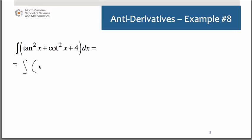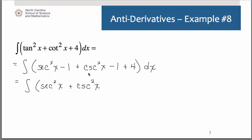Tangent squared is equal to secant squared of x minus 1. Cotangent squared is equal to cosecant squared of x minus 1. And then we have the plus 4. Let's go ahead and simplify that a little bit before we actually do our antiderivative. Negative 1 minus 1 plus 4, of course, is plus 2. It saves us a little bit of work. Notice how we're keeping the differential there as we rewrite this. Now we have rules for these.